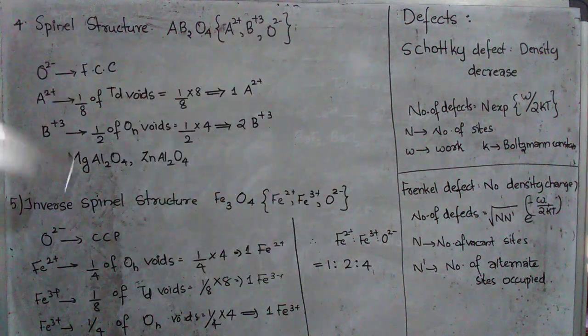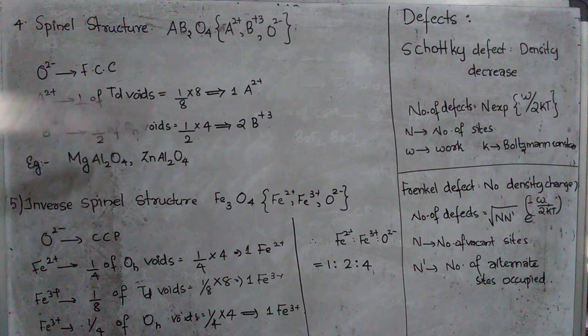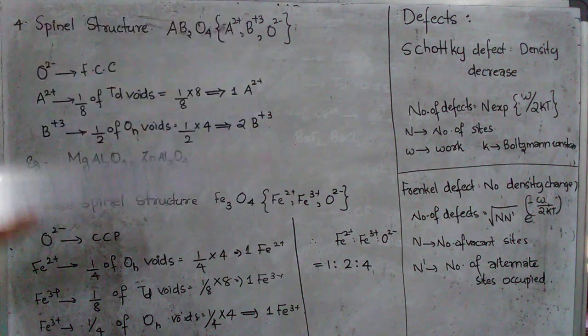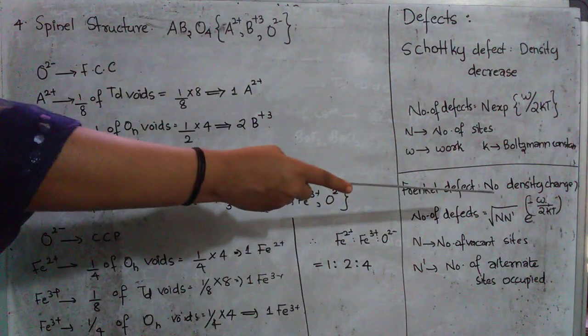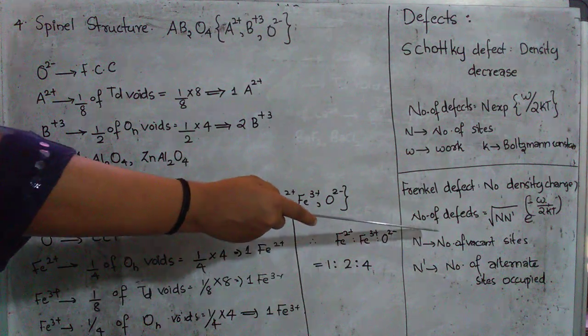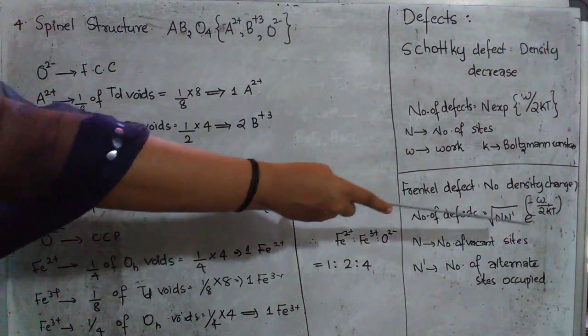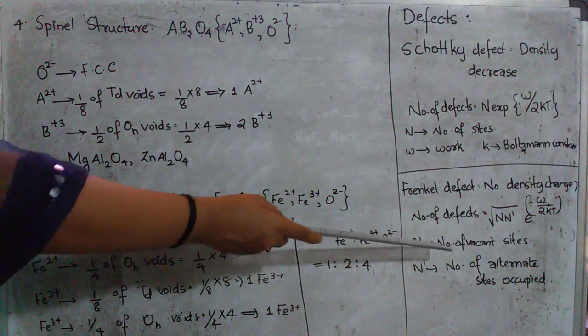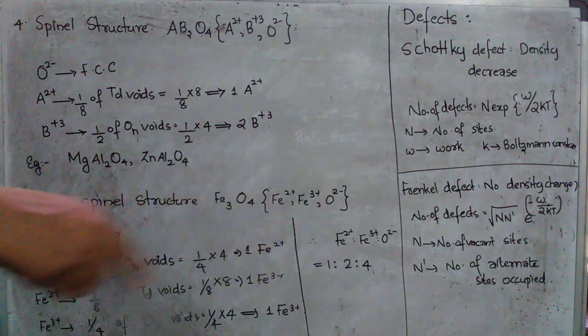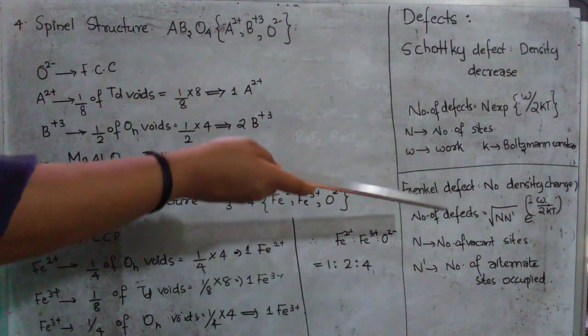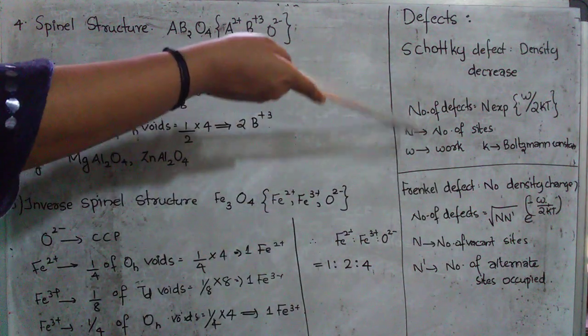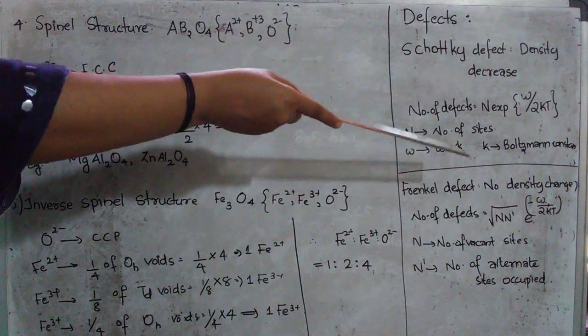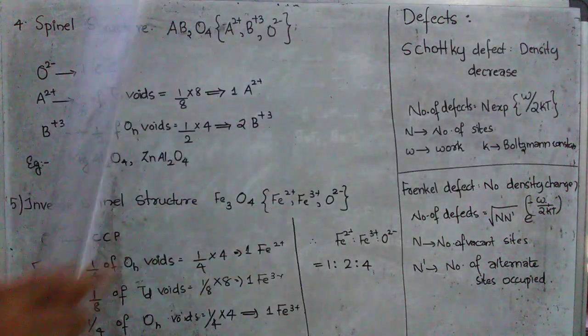Then comes the Frenkel defect. Here we know that though so many sites are vacant equal number of sites are occupied as well. So there will be no density change. And the number of defects will be root of N times N' times e raised to -W/2kT. Where N will be the number of vacant sites. N' will be the number of alternate sites occupied. W, k and T will be the same as what is mentioned in Schottky defect which will be work, Boltzmann constant and temperature.